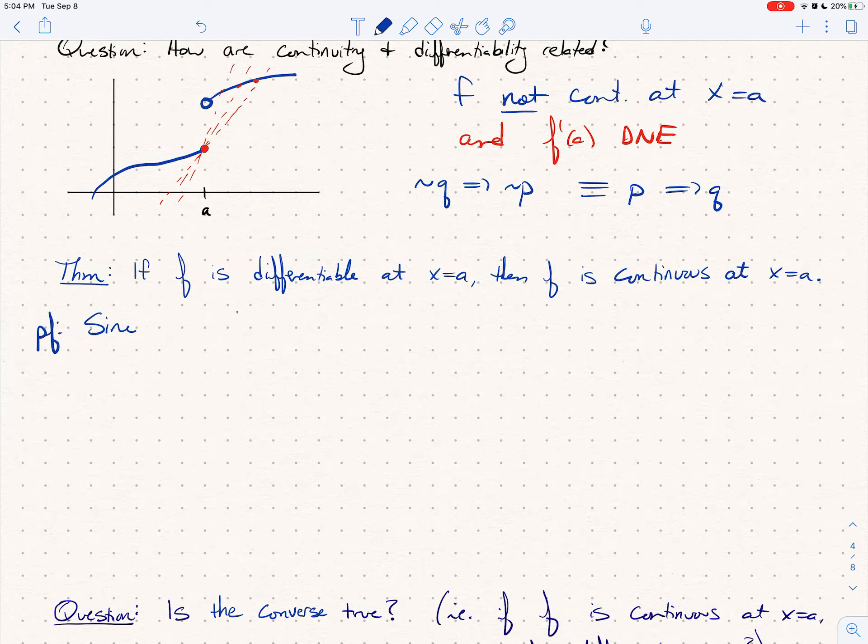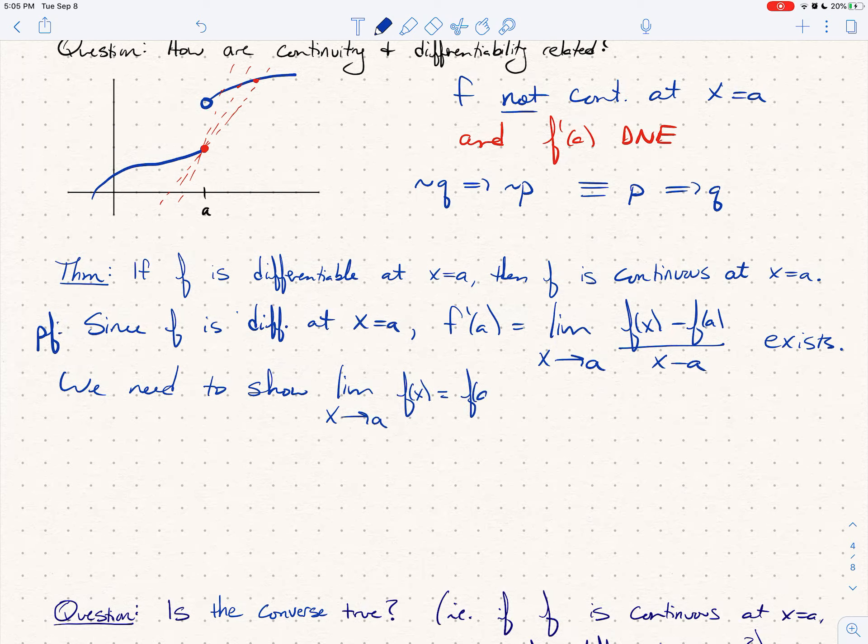So proof, so since f is differentiable at x equals a, what does that even mean? That means that f prime of a, which by the way is the limit, we're going to write it the other way, limit as x goes to a of f of x minus f of a over x minus a, this limit exists. It actually goes to a specific value. And so we want to show the function is continuous at a. What does that mean? Well, let's go ahead and say we need to show the limit as x goes to a of f of x is in fact f of a.